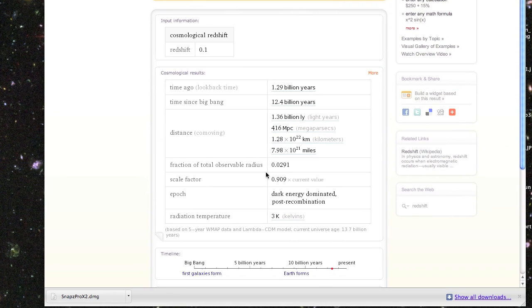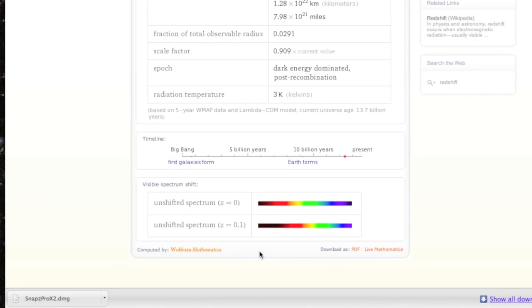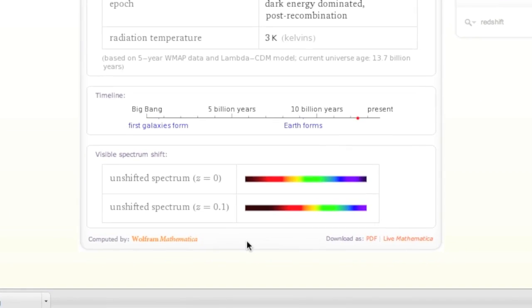A star or galaxy moving towards us has a spectrum that is shifted to the blue as compared with the stationary spectrum, and red shifted if the object is moving away.